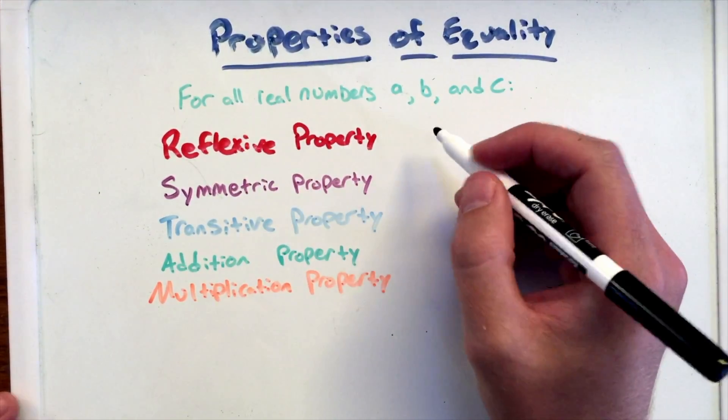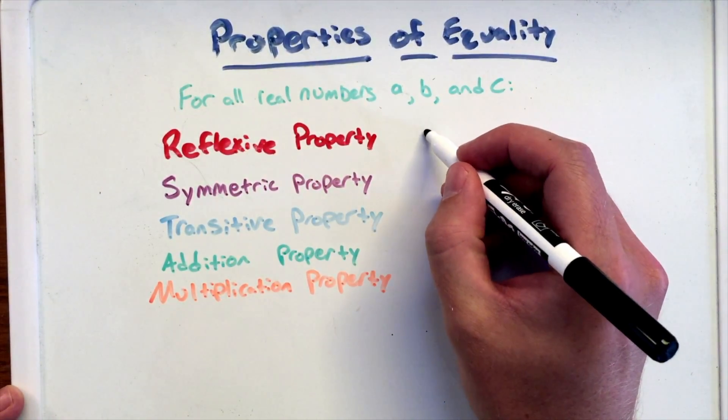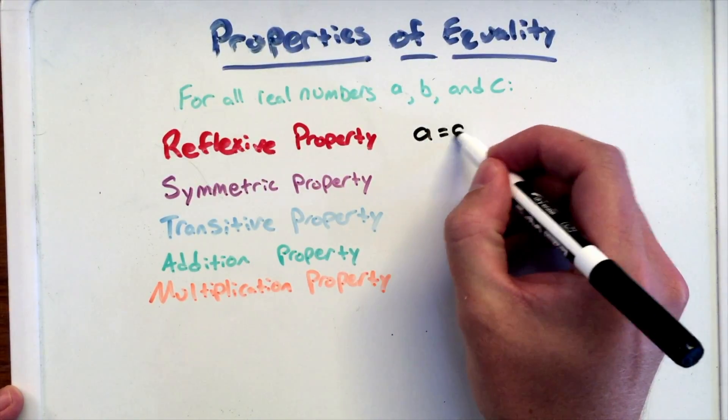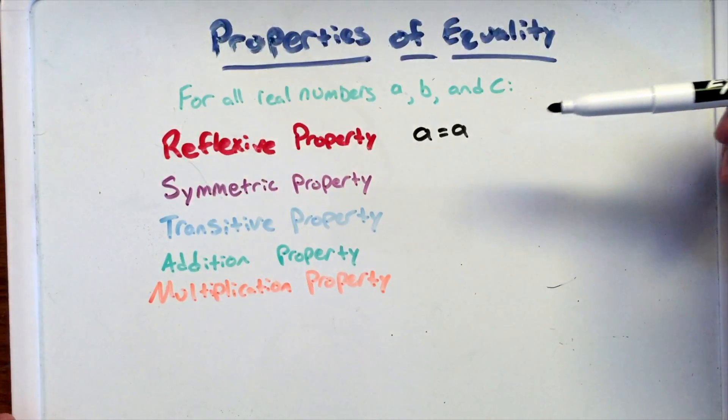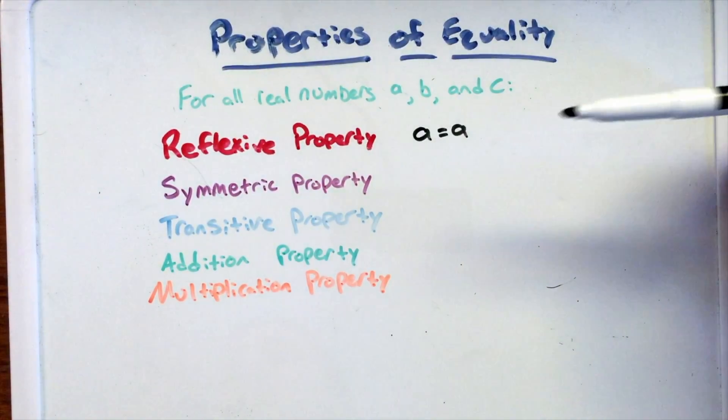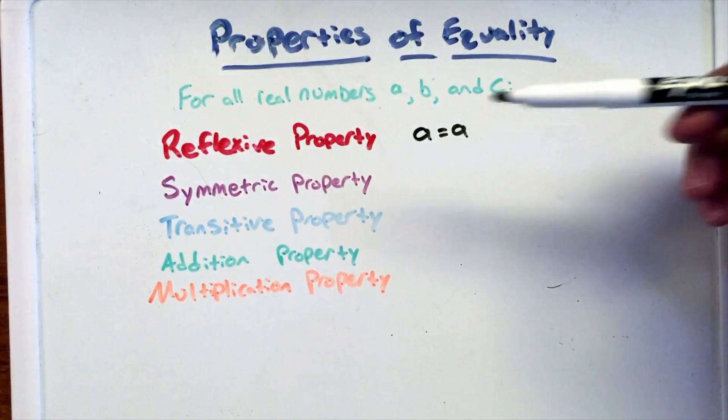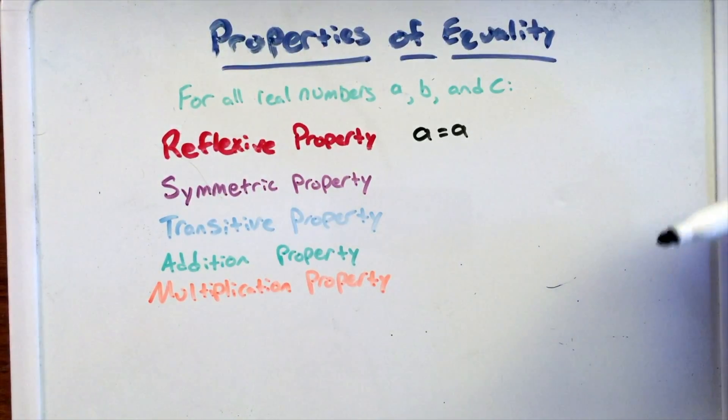Well the first property, the reflexive property, is a simple property and all it states is that A equals A, saying a real number is equal to itself. At first glance it kind of looks like what's the point - we know that a number is equal to itself - yes, but it's going to come into play later on in mathematics and it's a good property to know.